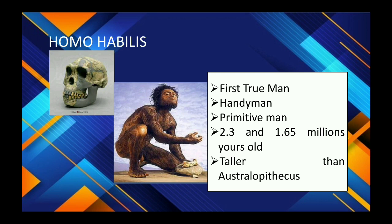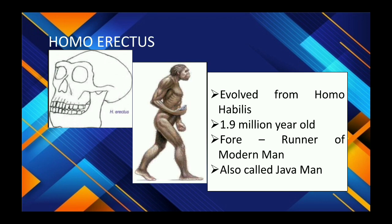According to natural selection by Charles Darwin, Homo erectus evolved from Homo habilis, 1.9 million years old, and is considered a forerunner of modern man, also called Java Man. They stood 1.5 to 1.8 meters tall, had protruding jaws, a projecting brow ridge, and smaller teeth. Cranial capacity was 800 to 1,300 cc. They were the first to use fire, used spears, and fossils were found in Java, Indonesia, and Peking, China.